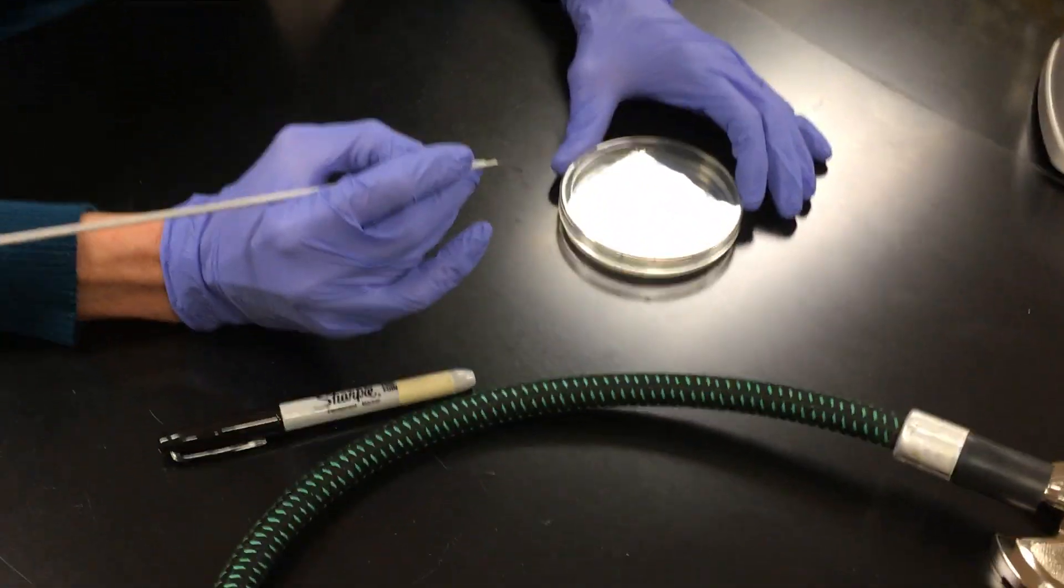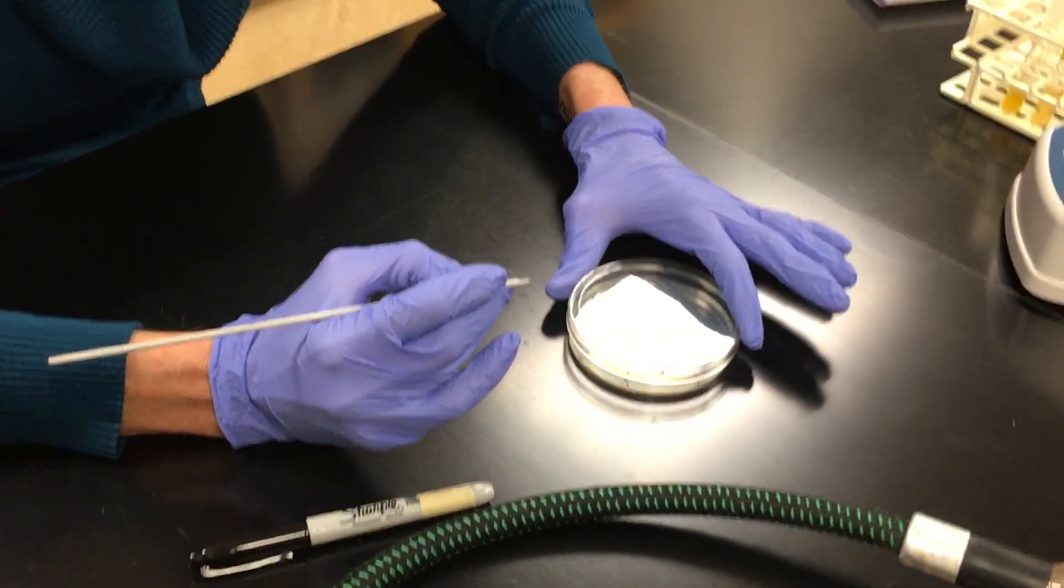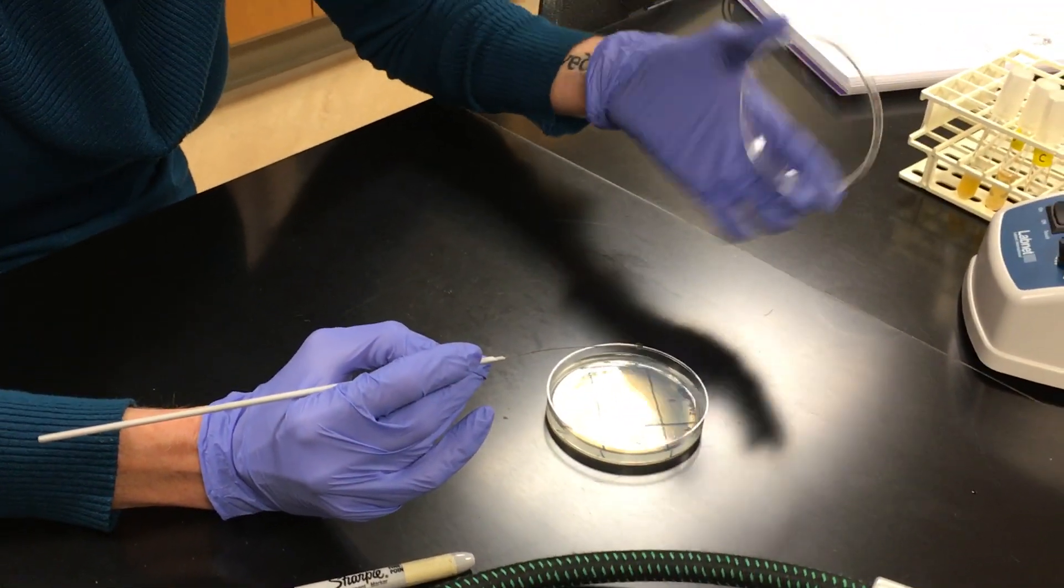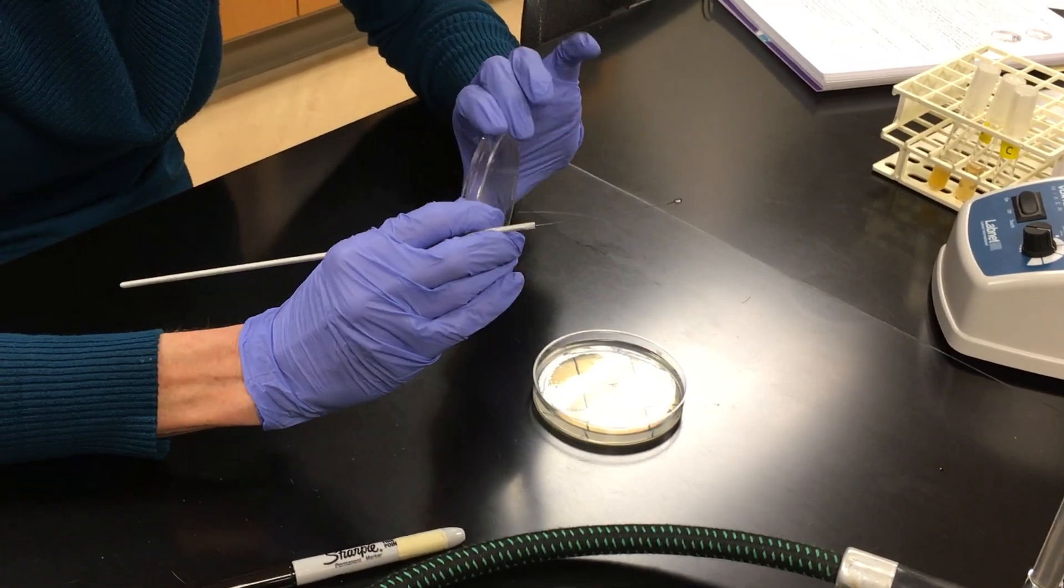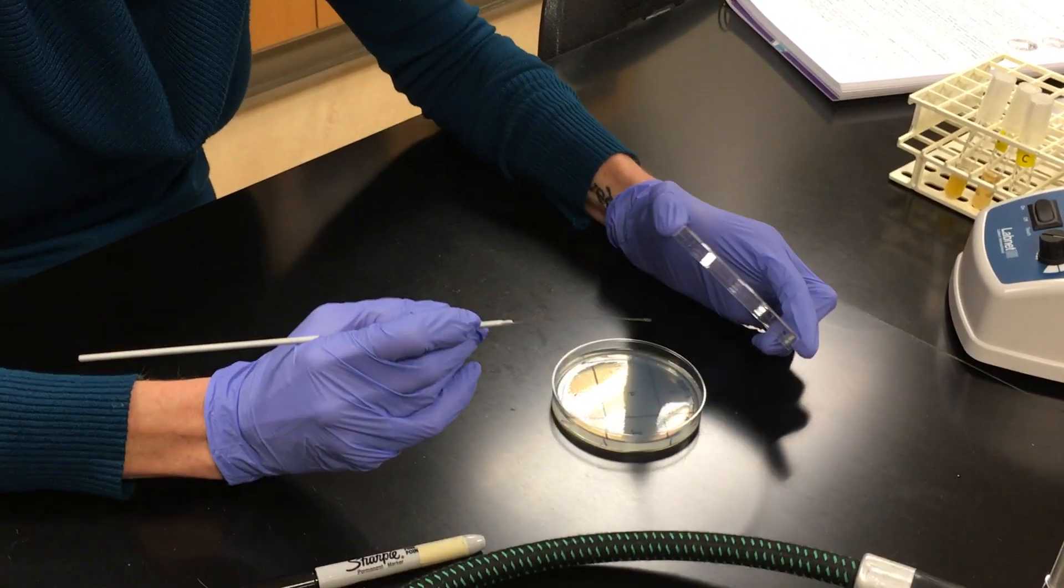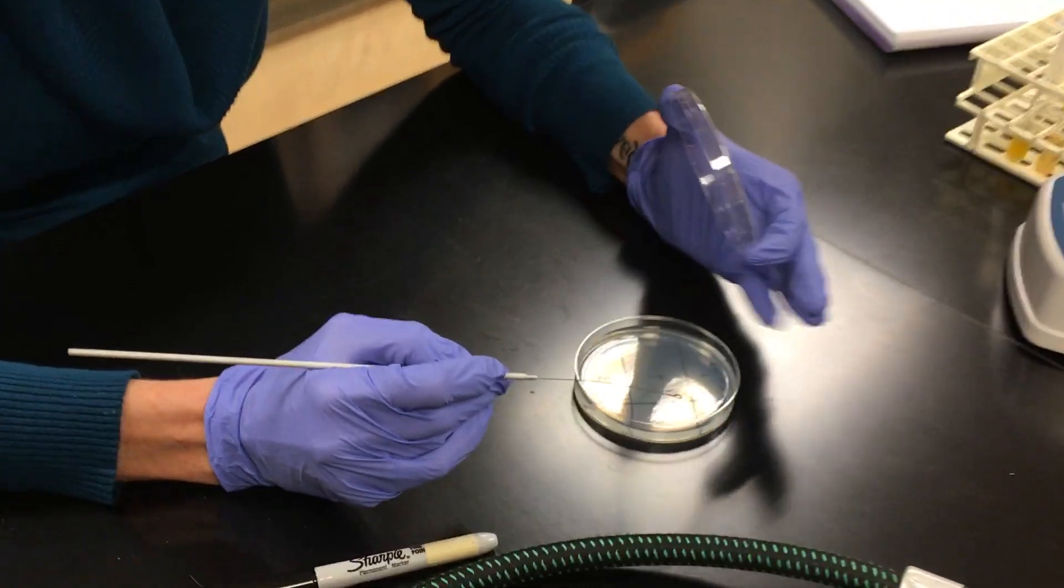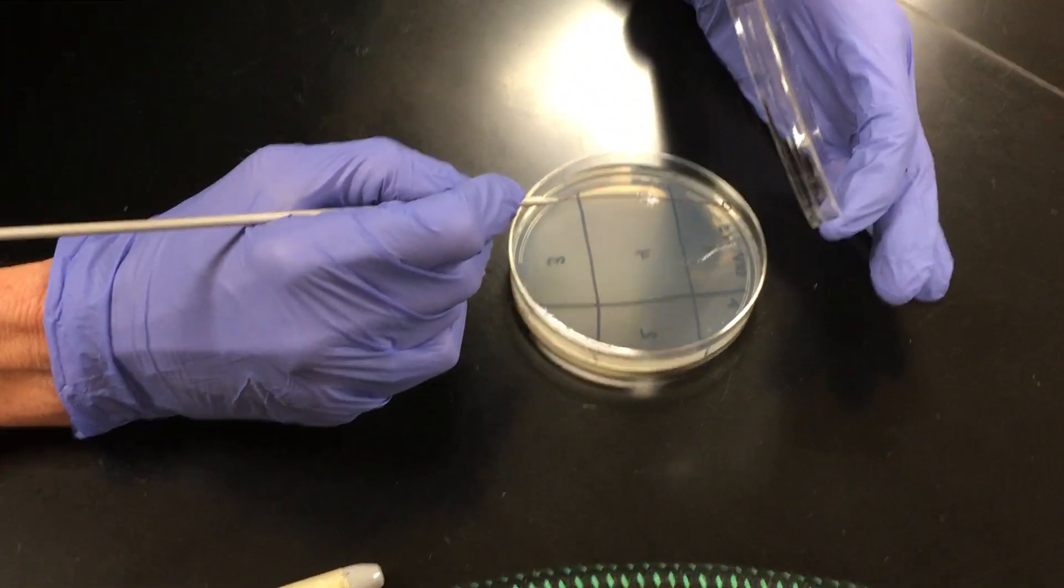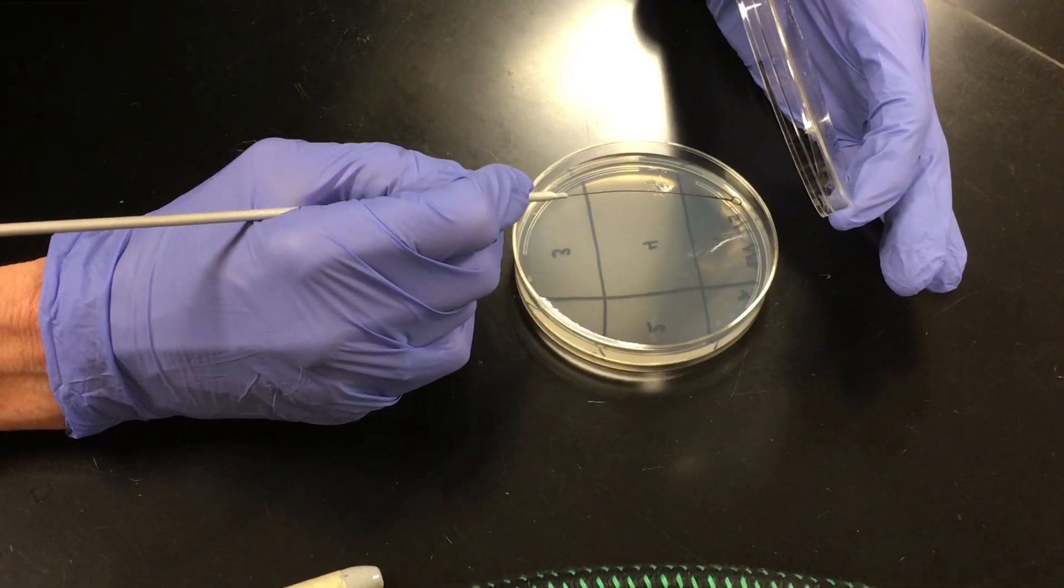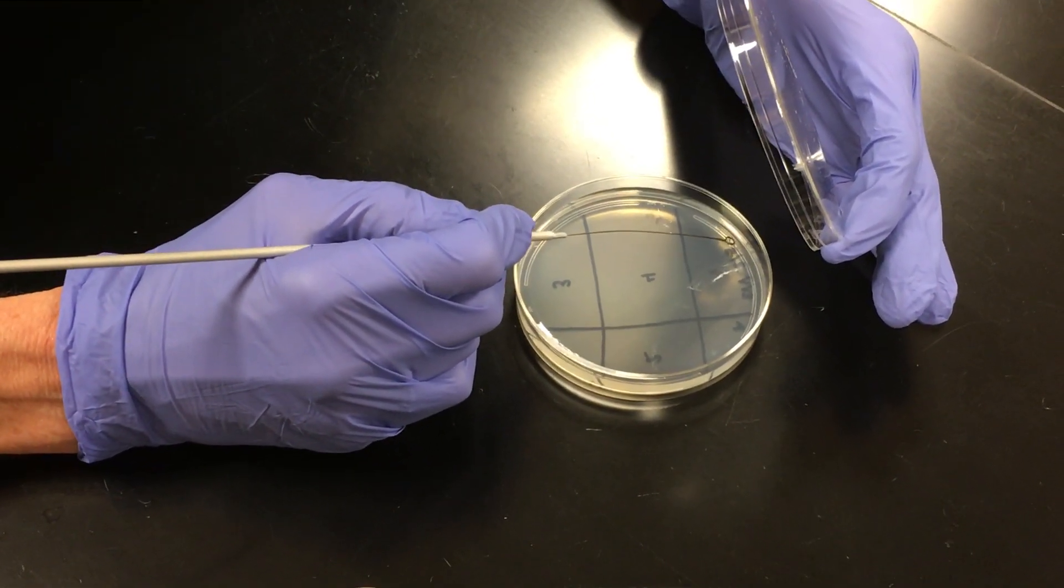So now it's time to streak our plate. So we have the lid. We never want to wave it around. We don't ever want to put it down onto the lab bench. We're going to use this lid as a shield because there are contaminants in the air. We don't want them to get on our plate. So we're going to begin in quadrant one.